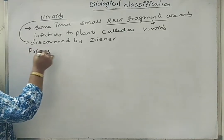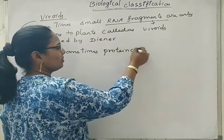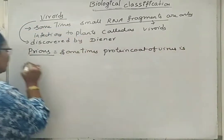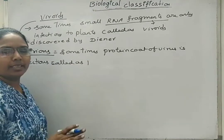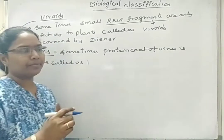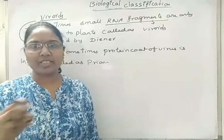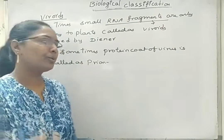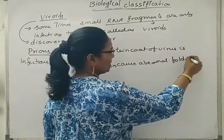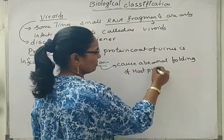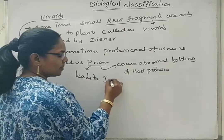Another term is prions. Sometimes the protein coat or capsid of a virus is itself infectious — this is called a prion. There is no genetic material involved; it is only the protein coat. Prions cause abnormal folding of proteins, which leads to Jacob's disease or mad cow disease.